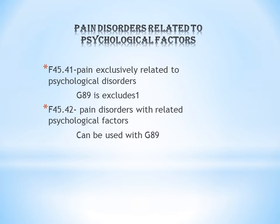The second code is F45.42: pain disorders with related psychological factors. In this case, the patient can have both types of pain — physical pain and psychological or emotional pain together.